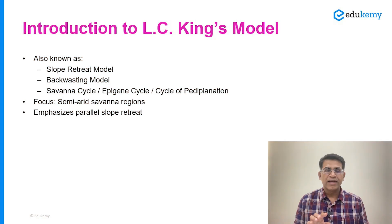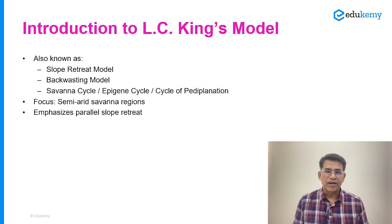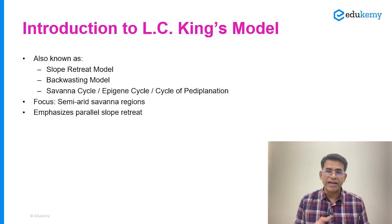In this video I am going to revise the slope retreat model or the back wasting model of LC King. These two or three models sometimes trouble us because the concepts are very close to one another. If you are asked about LC King's model, remember that it is also called the epigenes cycle, the cycle of pediplination, the savannah cycle, and some books refer to it as the arid or semi-arid cycle. LC King's model itself is the epigenes cycle or the cycle of pediplination.